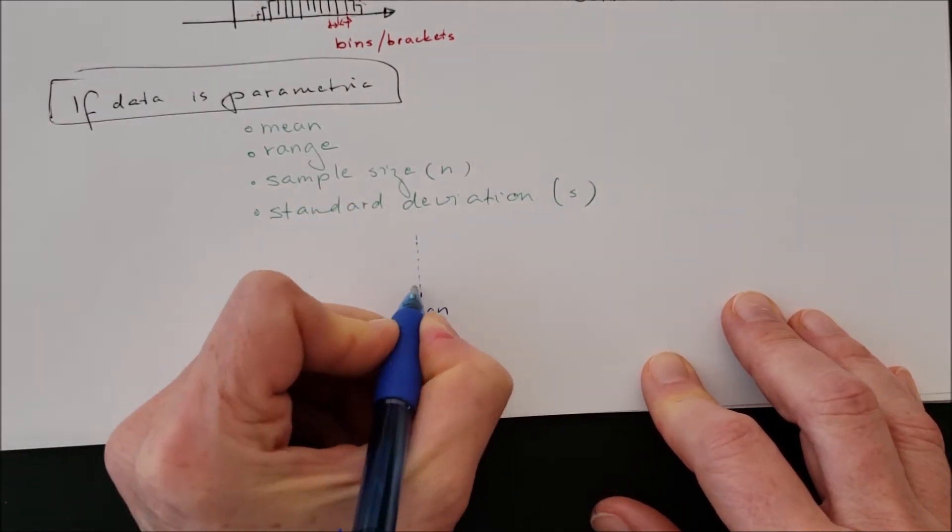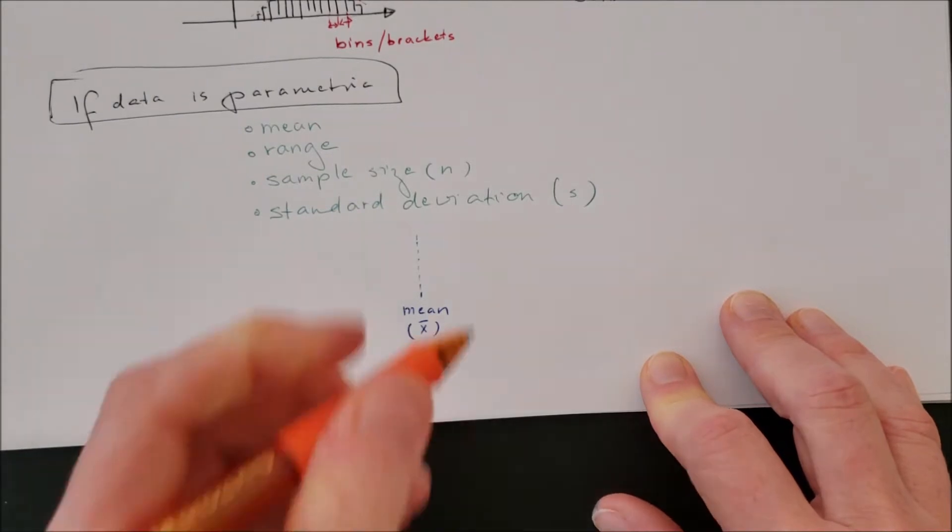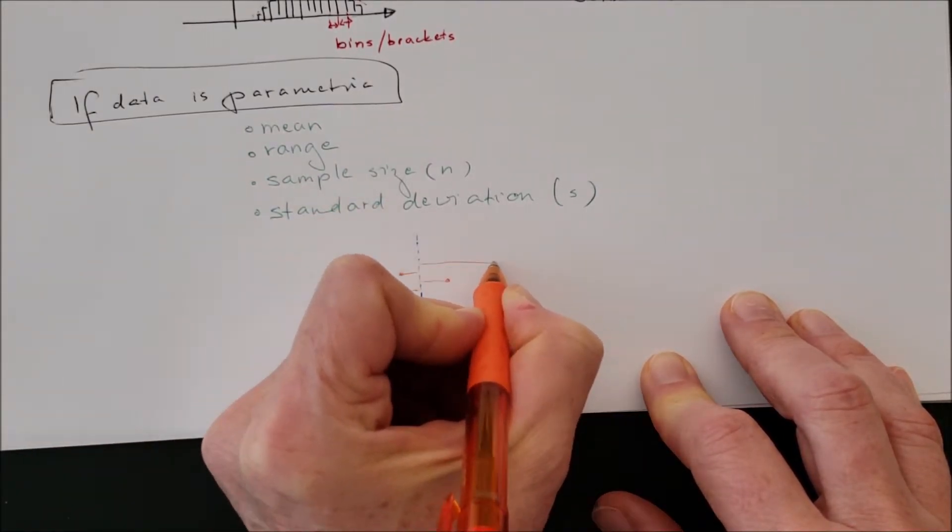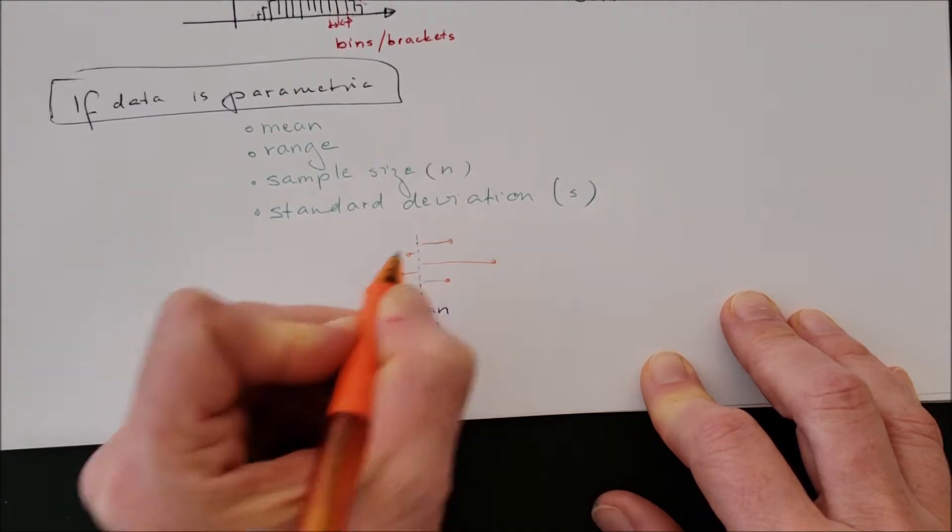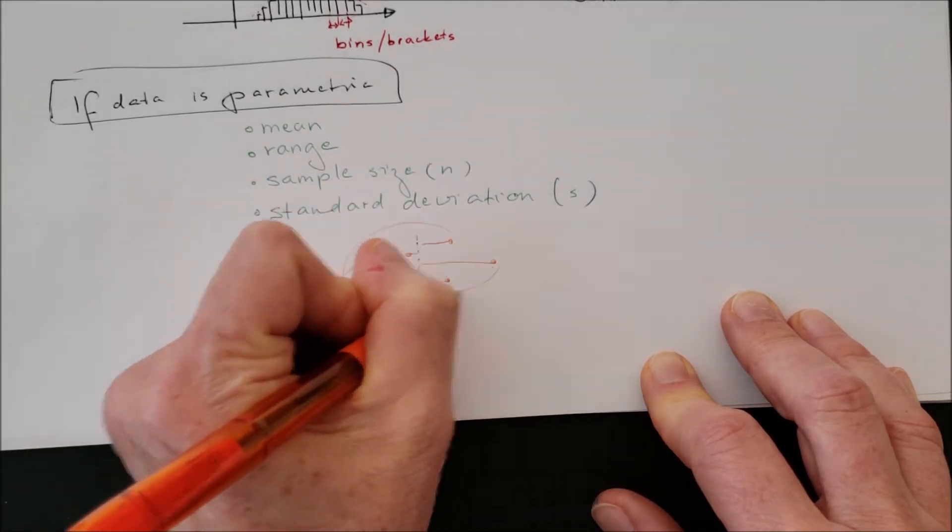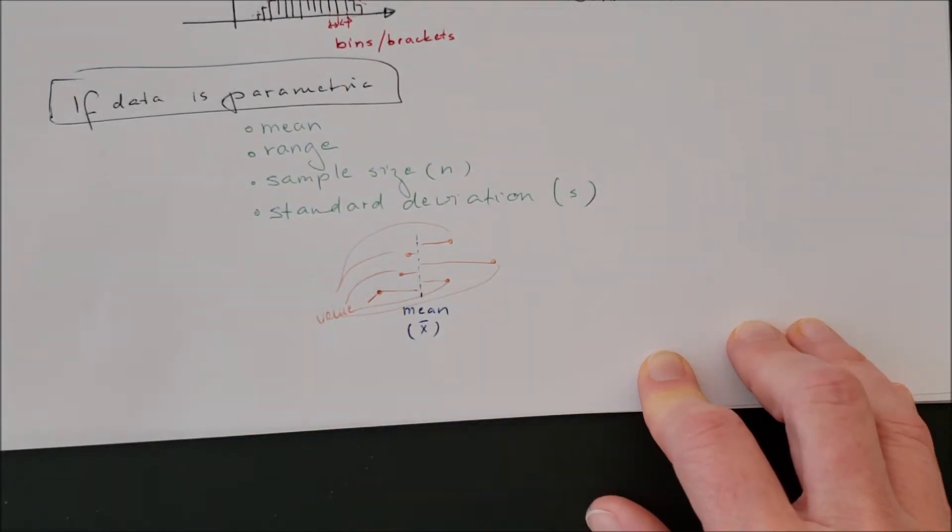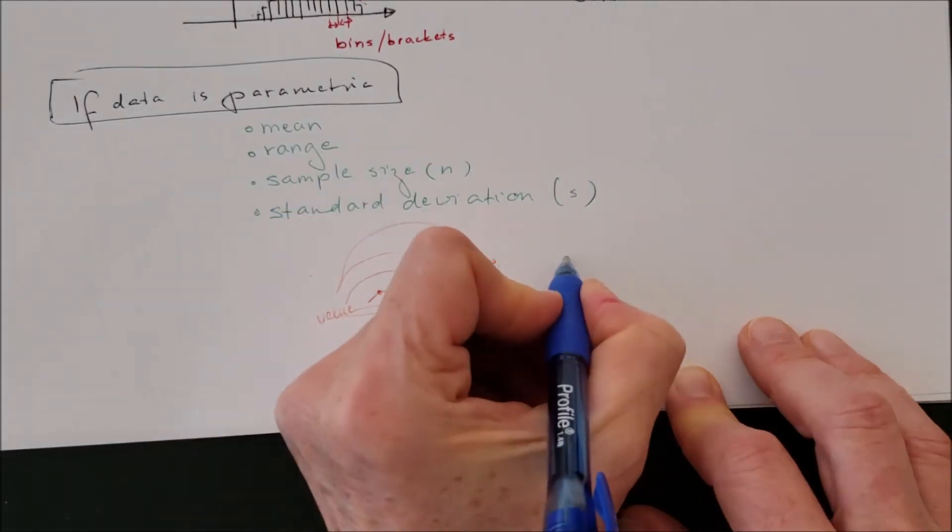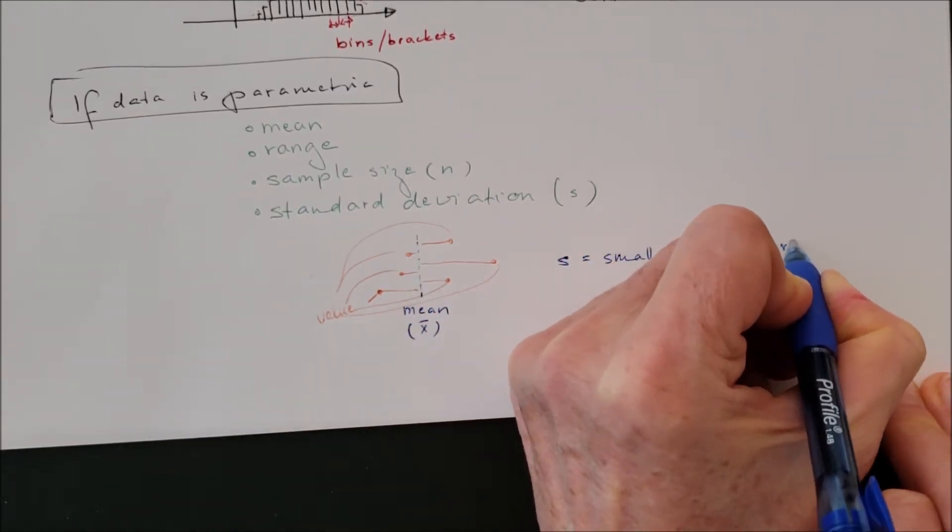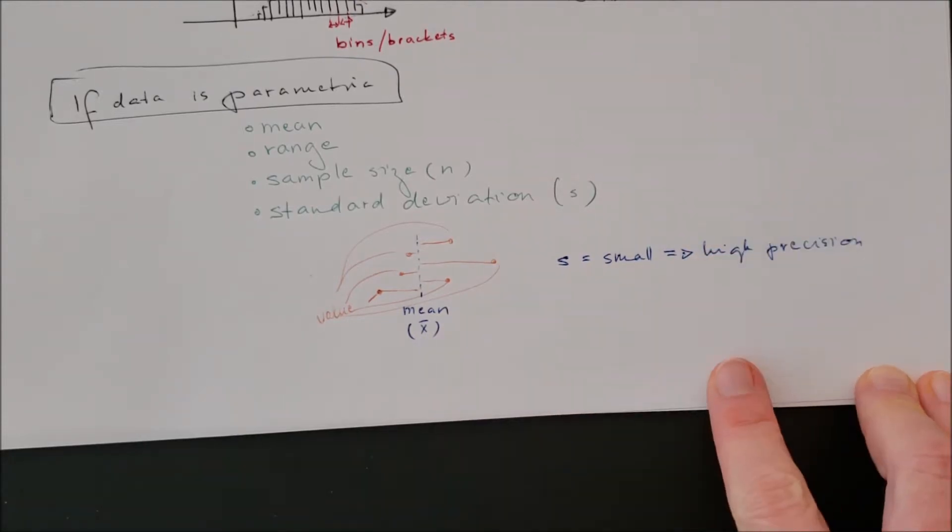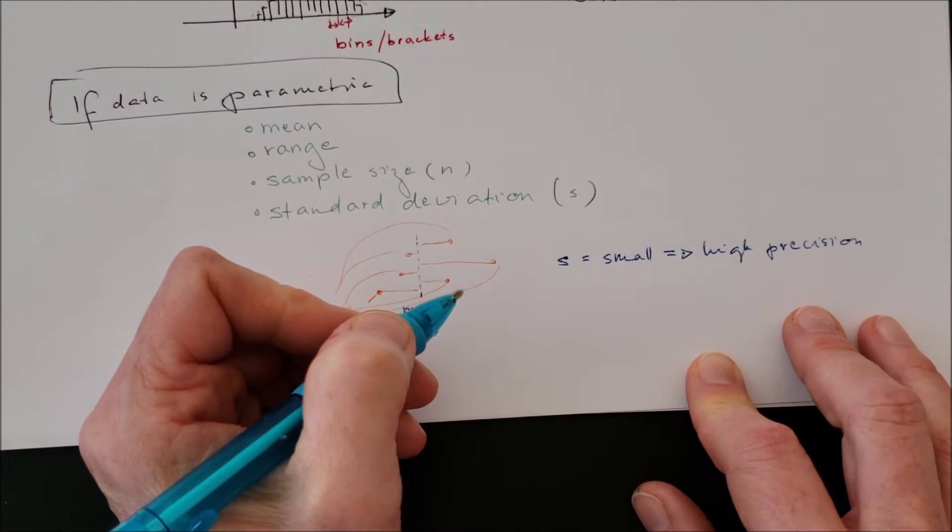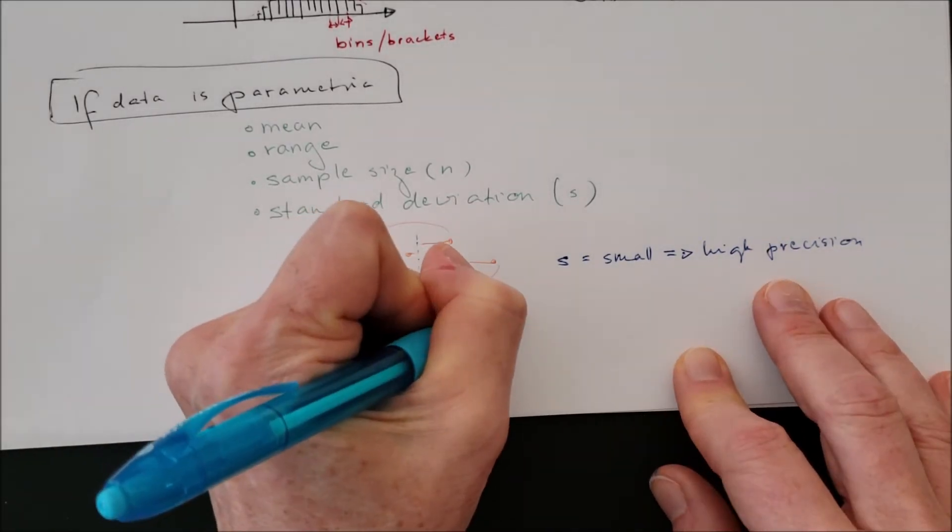I will just explain it with the drawing. This is the mean value on this place and these are the individual values what we measured left and right from the mean. These are the values and if they are really far away from the mean, we will say the standard deviation high. If we have a small standard deviation value, that means the values are close to the mean in the sample. So that means it's a high precision.